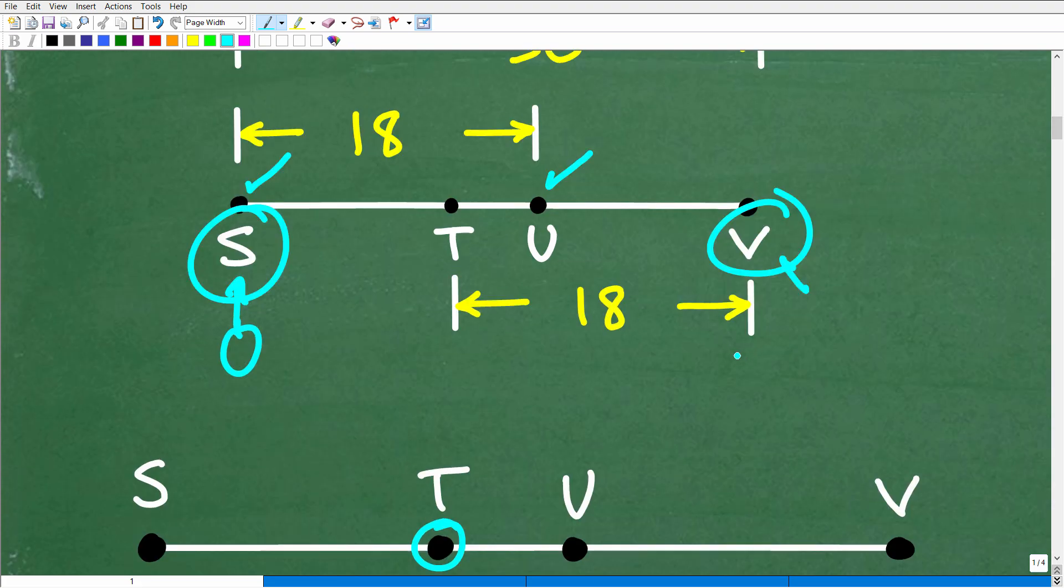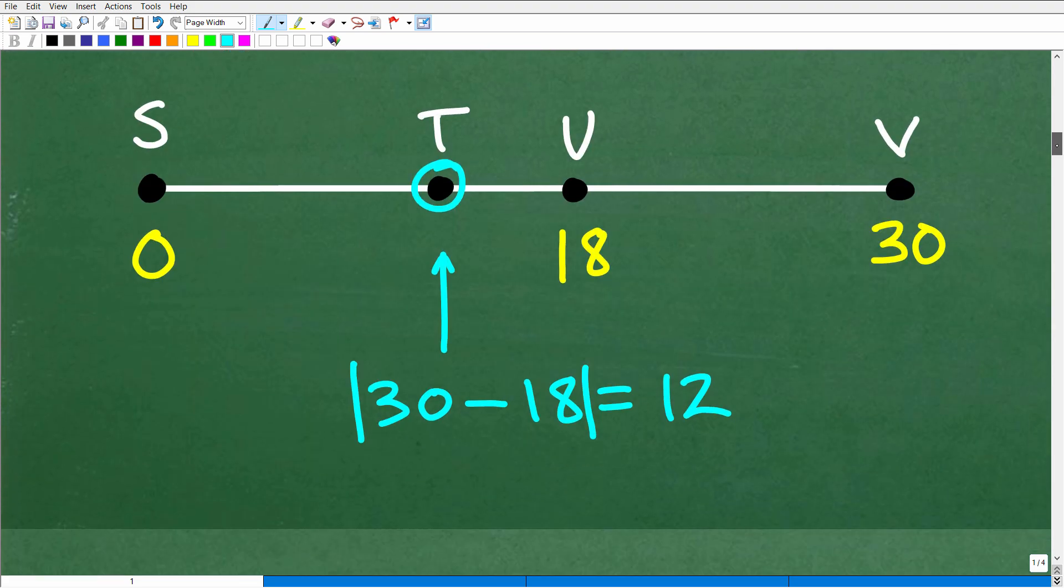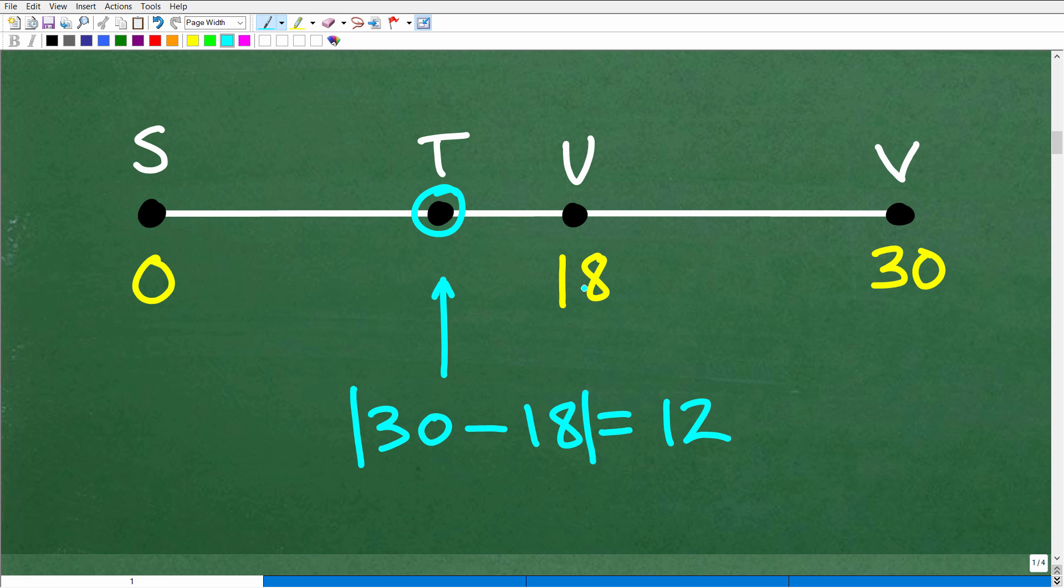So how can we do that? Well, let's go back to our first initial graph. We know that T is going to be 18 units away or 18 units previous than V. So if we kind of think of a number line, if we know what V is, if we subtract away 18, we'll get to T. All right, so let's go and do that now. Now, so 30 minus 18 is going to be 12. So T right here is at 12 on a number line.